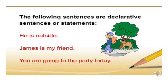Now what are declarative sentences? Declarative sentences are simple statements. For example: he is outside, James is my friend, you are going to the party today.